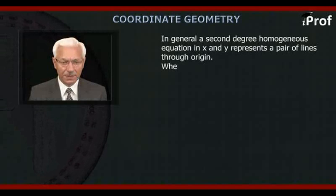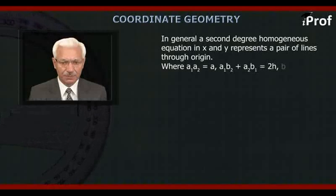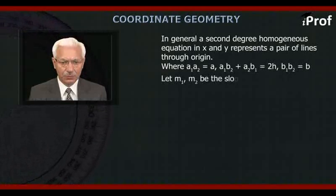Where a₁a₂ = A, a₁b₂ + a₂b₁ = 2H, b₁b₂ = B. Let m₁ and m₂ be the slopes of the two lines.